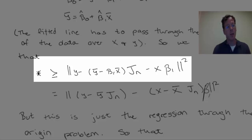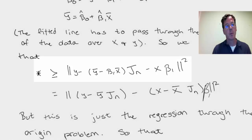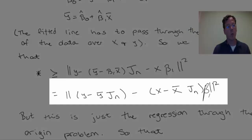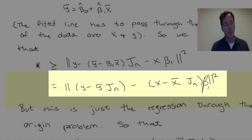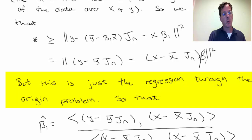Then notice we can rewrite it as y minus y-bar times jn minus x-bar times jn times beta 1, which is exactly regression through the origin with the centered data.